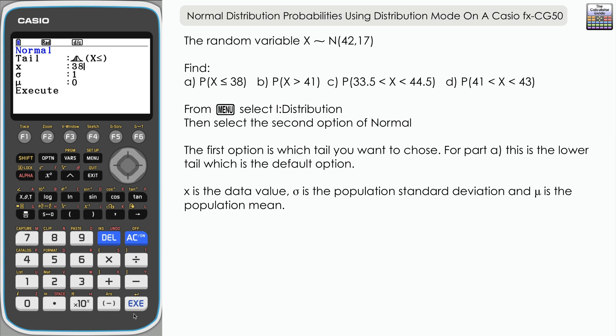So X is 38 for part A. Sigma is the standard deviation. Looking at the distribution, remember that the variance is given, which is 17, so we want to find the square root of that. The calculator can do that for us.